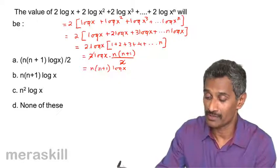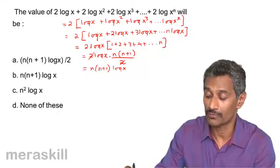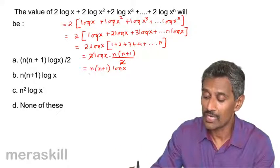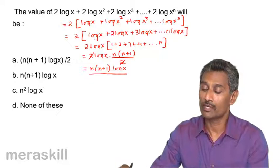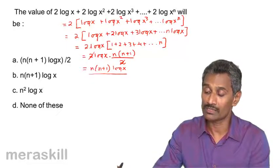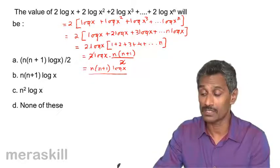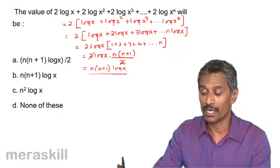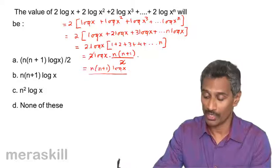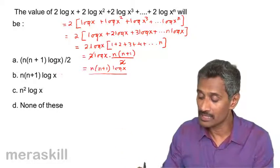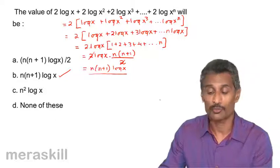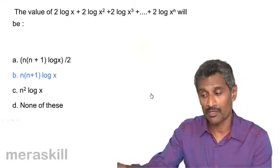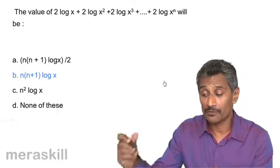For example, if n is 2, it becomes 2·3·log x = 6·log x. The general result is n(n+1)·log x. Collect all the terms, log x factors out, and what is inside is the sum of the first n natural numbers: n(n+1)/2. So the answer is n(n+1)·log x. Please take extra care with these kinds of problems.